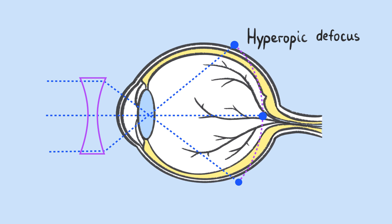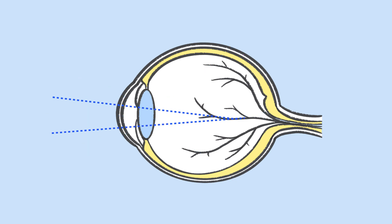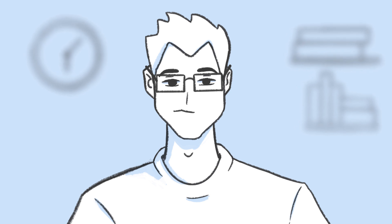Now that your eyeball is longer, light focuses even further in front of the retina, and you're even more nearsighted than before. Higher and higher correction glasses can continue to cause the eyeball to elongate.